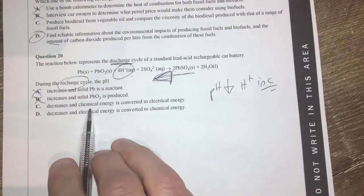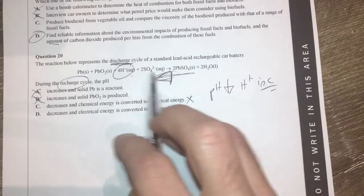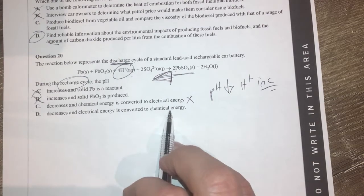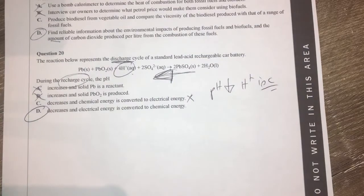Decreases chemical energy is converted to electrical energy. That is definitely not right because we're recharging a battery where we're going to use electrical energy and convert it into chemical energy. So D is the option there as well. Alrighty. Done.